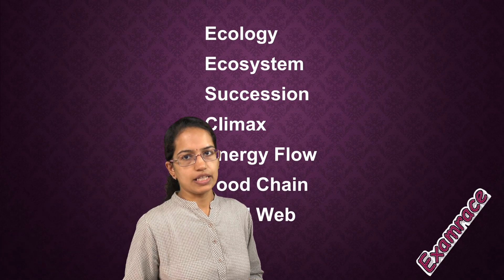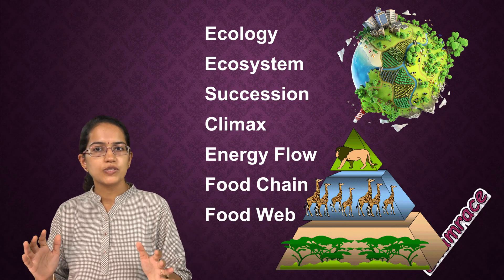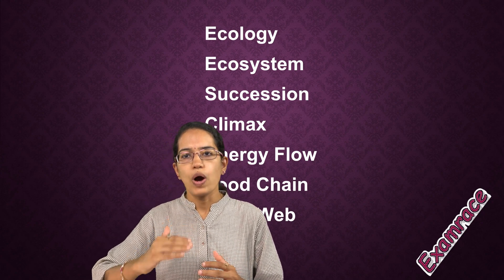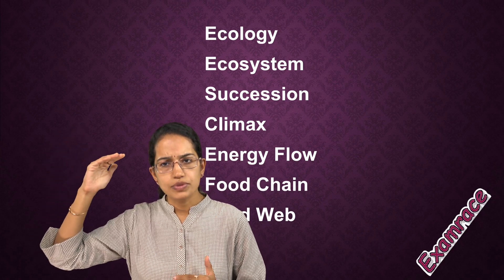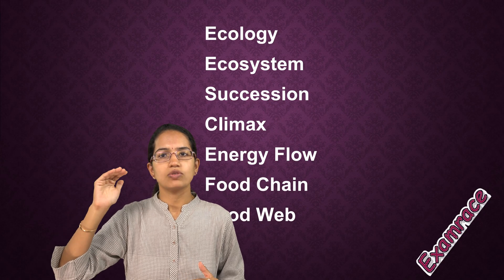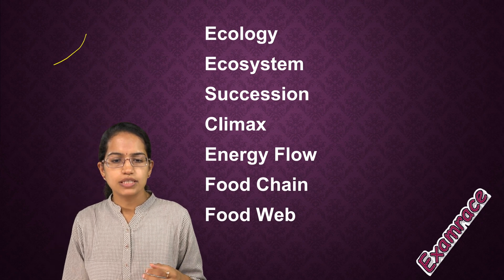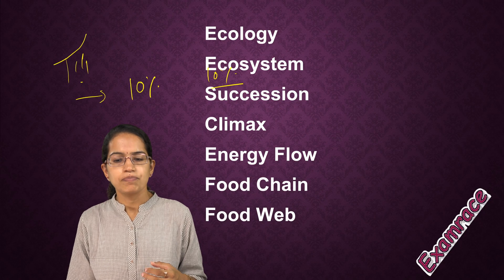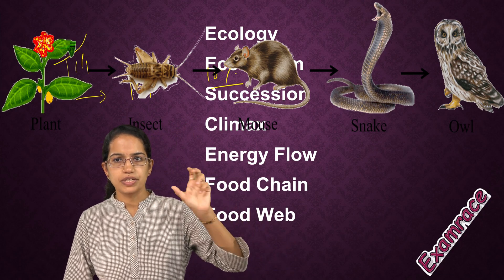Then you have the environmental issues. You have to understand what is ecology and ecosystem — differences between ecology and ecosystem have been covered in a separate video. Then we talk about succession: how one species is taken over by another and ultimately reaches a climax point where they can maximally survive. You have energy flow from the sun — only 1% of energy is absorbed, and with each successive level there is 10% energy transfer. Food chain and food web have been discussed in separate short videos.